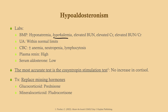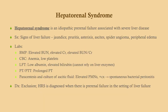Treatment is to replace the missing hormones: replace aldosterone with fludrocortisone, a mineralocorticoid, and replace the glucocorticoid with prednisone. Hepatorenal syndrome is an idiopathic pre-renal failure associated with severe liver disease. If a patient is going into renal failure and has a history of cirrhosis or severe liver disease, it's probably hepatorenal syndrome — look for signs of liver failure in addition to signs of uremia and electrolyte abnormalities.